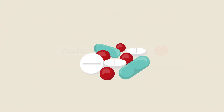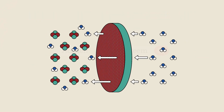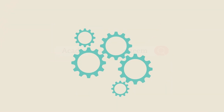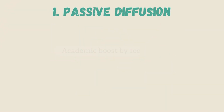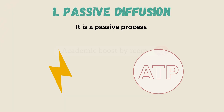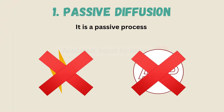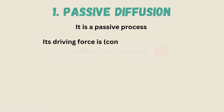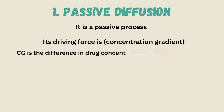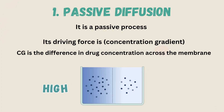In order for a drug to be absorbed, it must cross this membrane and reach the blood circulation. Starting with passive diffusion — it is a passive process, which means it doesn't need any energy or ATP. Its driving force is the concentration gradient: the difference in drug concentration across the membrane. As we can see, to the right we have high concentration while to the left we have low concentration, and this difference is the concentration gradient.